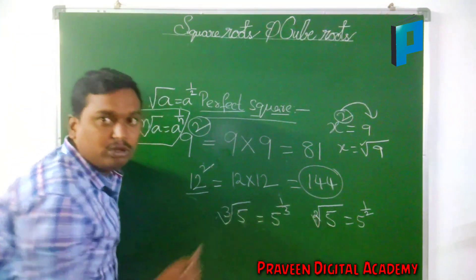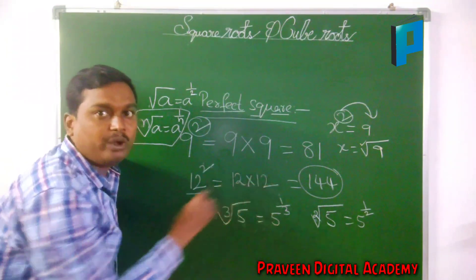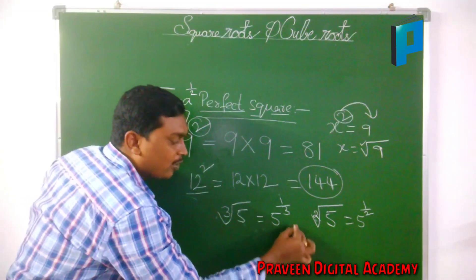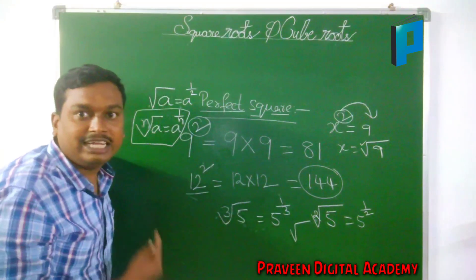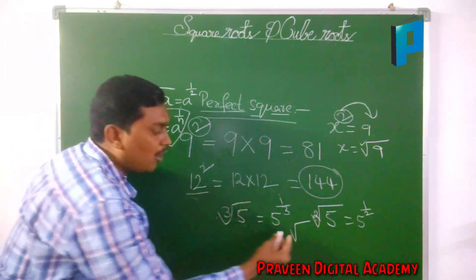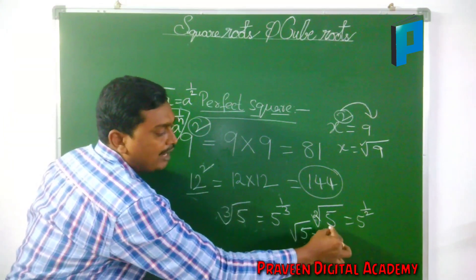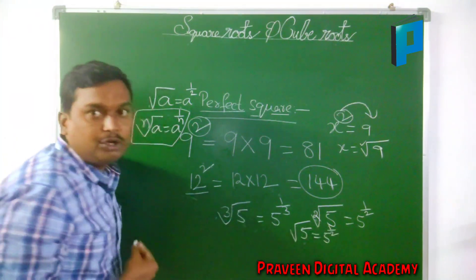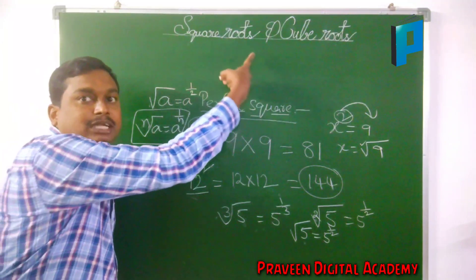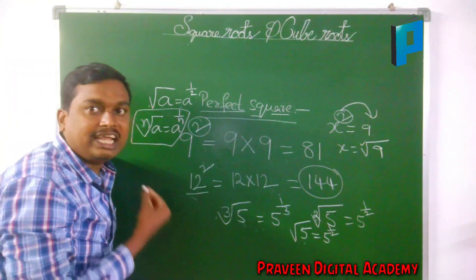Even if you are not having 2 in the place of the root sign, we have to consider it as 2 in the square root. The square root itself is the second root of the base — so second root of 5 equals 5 to the power 1 by 2. Simply, square root is the inverse function of a square.